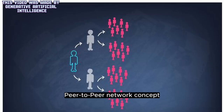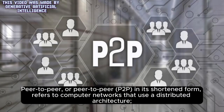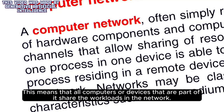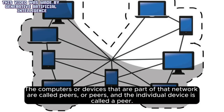Peer-to-peer, or P2P in its shortened form, refers to computer networks that use a distributed architecture. This means that all computers or devices that are part of it share the workloads in the network. The computers or devices that are part of that network are called peers, and the individual device is called a peer.